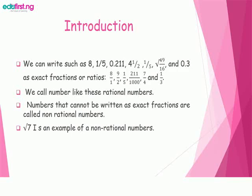Numbers that cannot be written as exact fractions are called non-rational numbers. Square root of 7 is an example of a non-rational number.